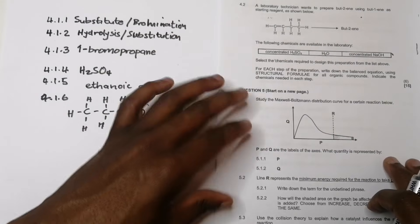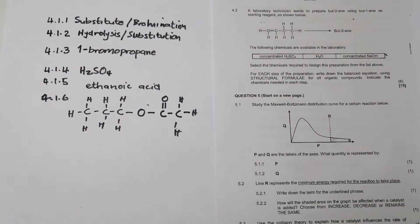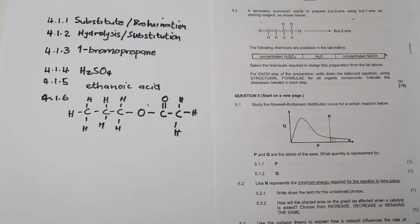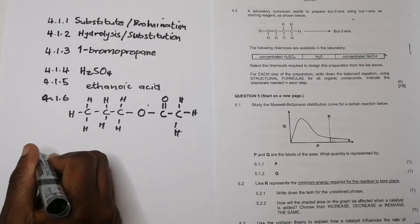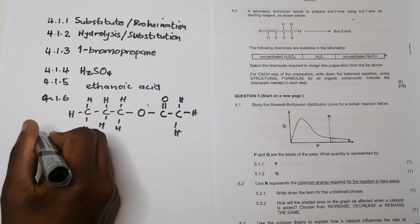Question 4.2: a laboratory technician wants to prepare but-2-ene using but-1-ene as the starting reagent. The following chemicals are available in the laboratory. Select the chemicals required and for each step write down the balanced equation using structural formulae for all organic compounds. We start with but-1-ene, an alkene.